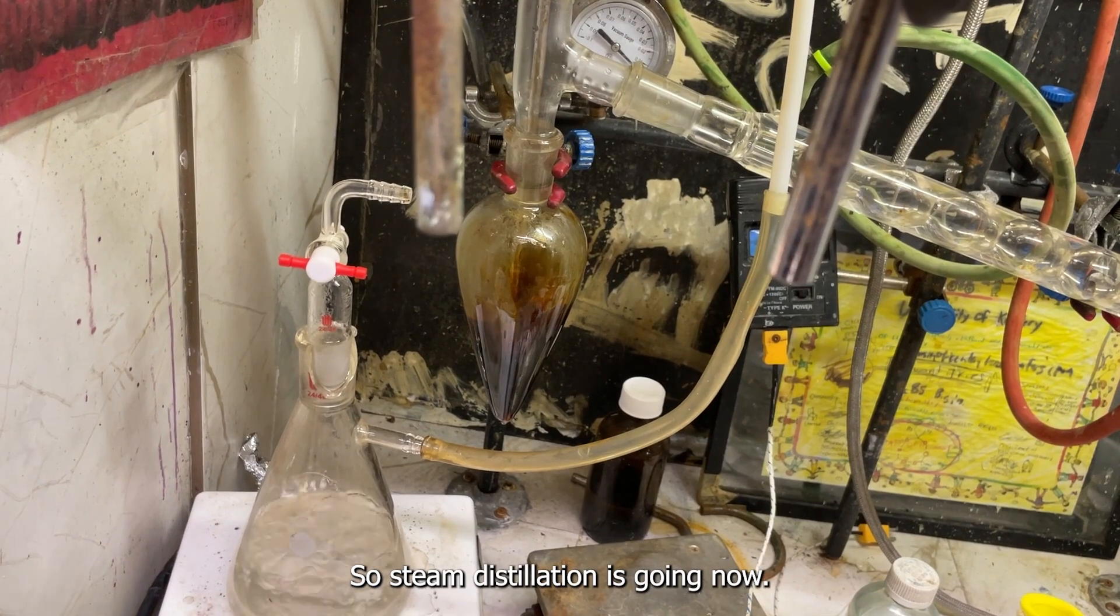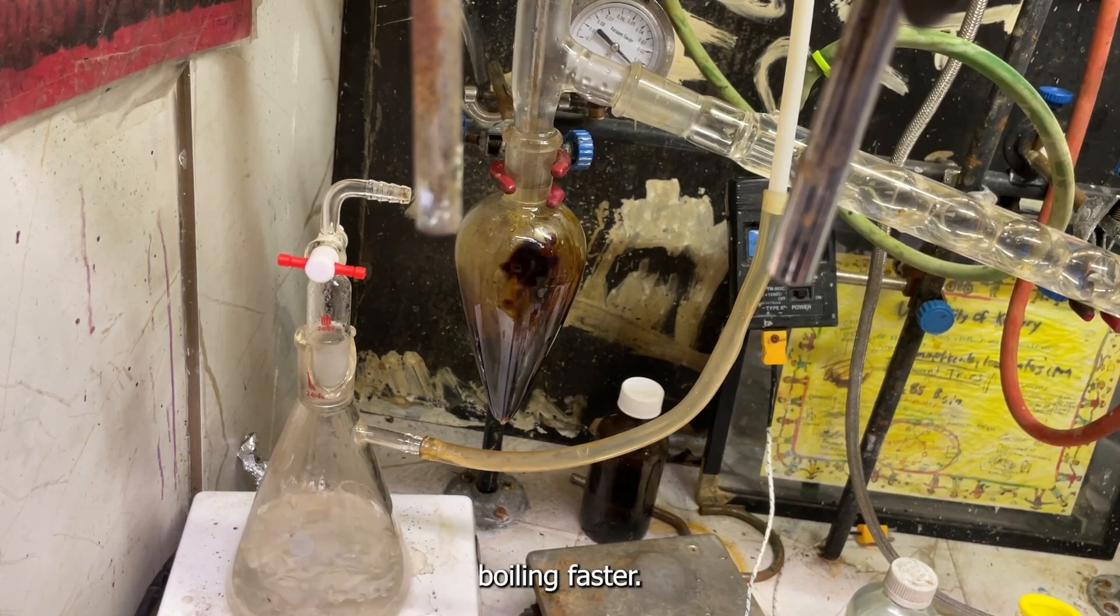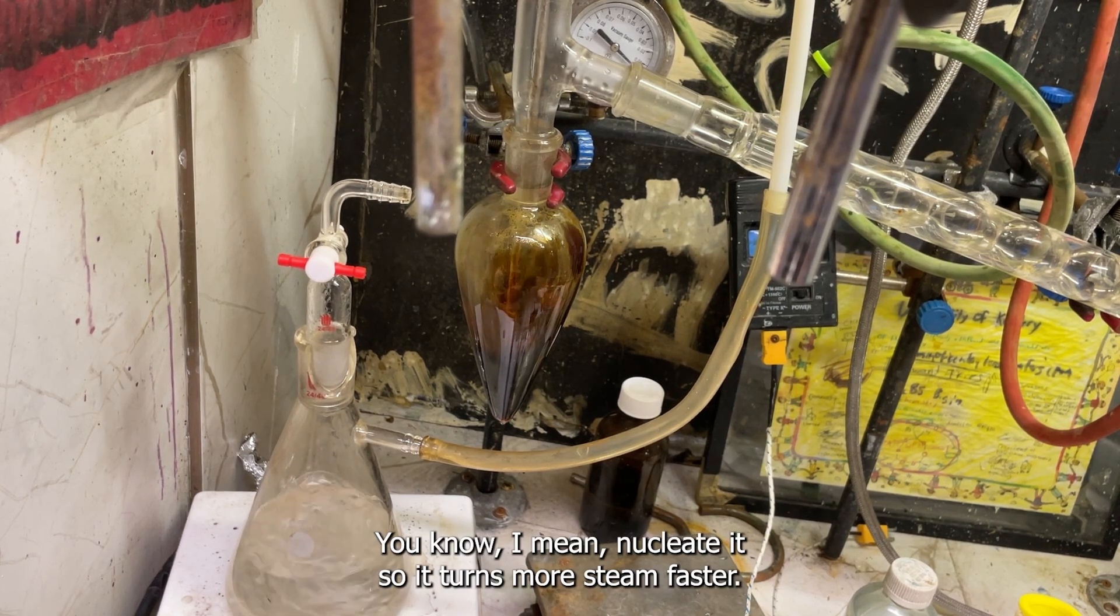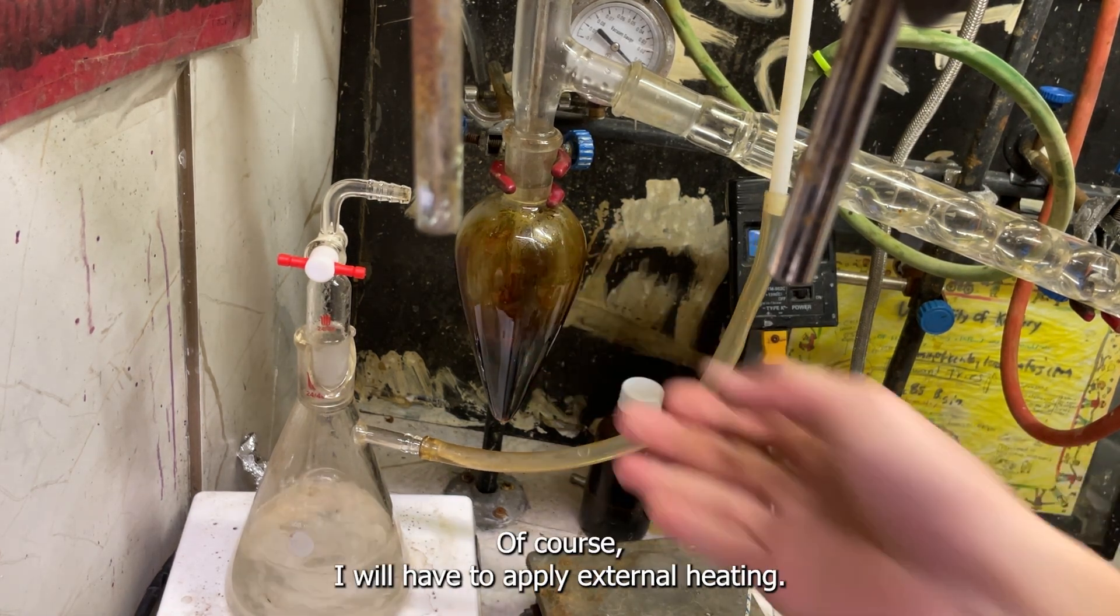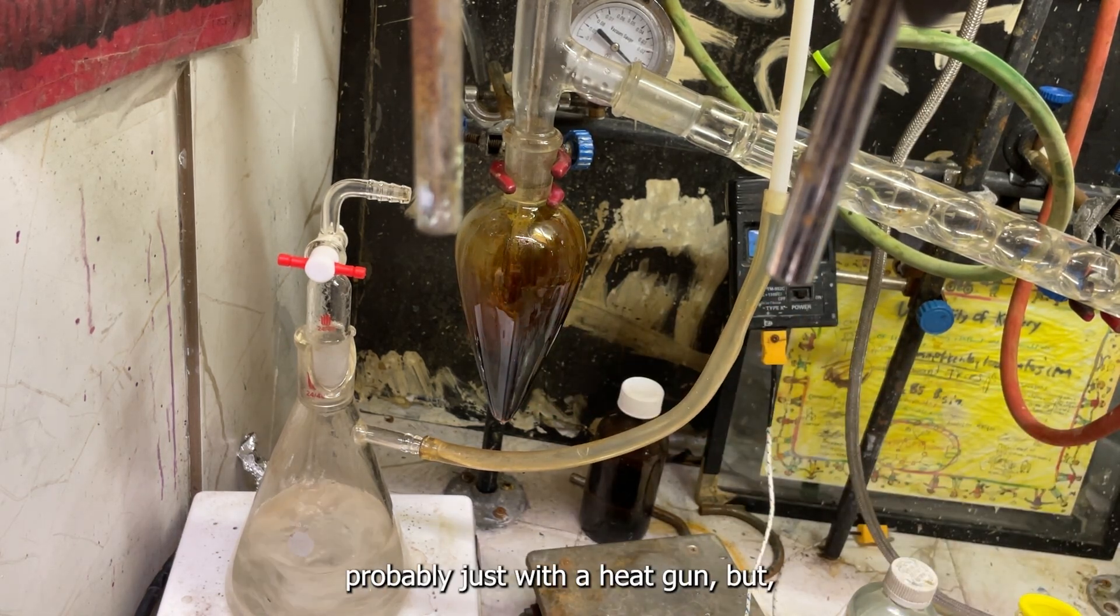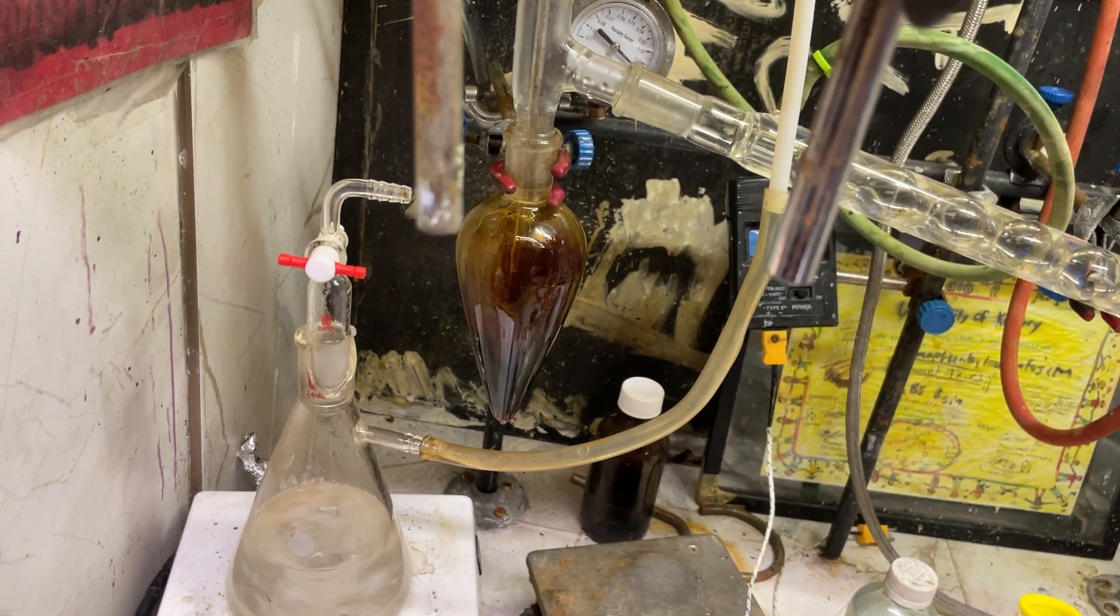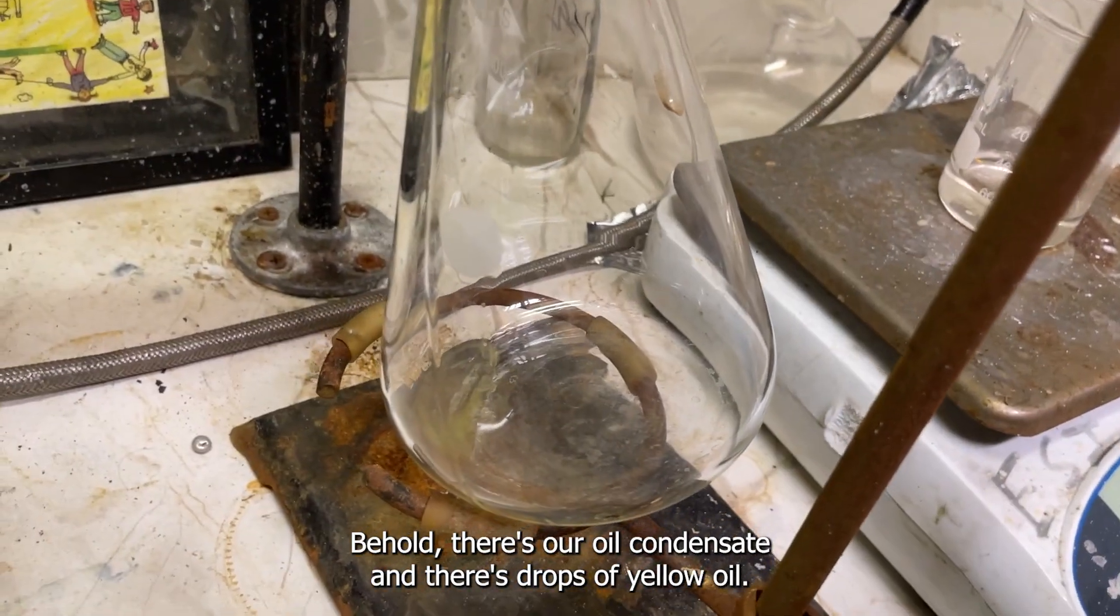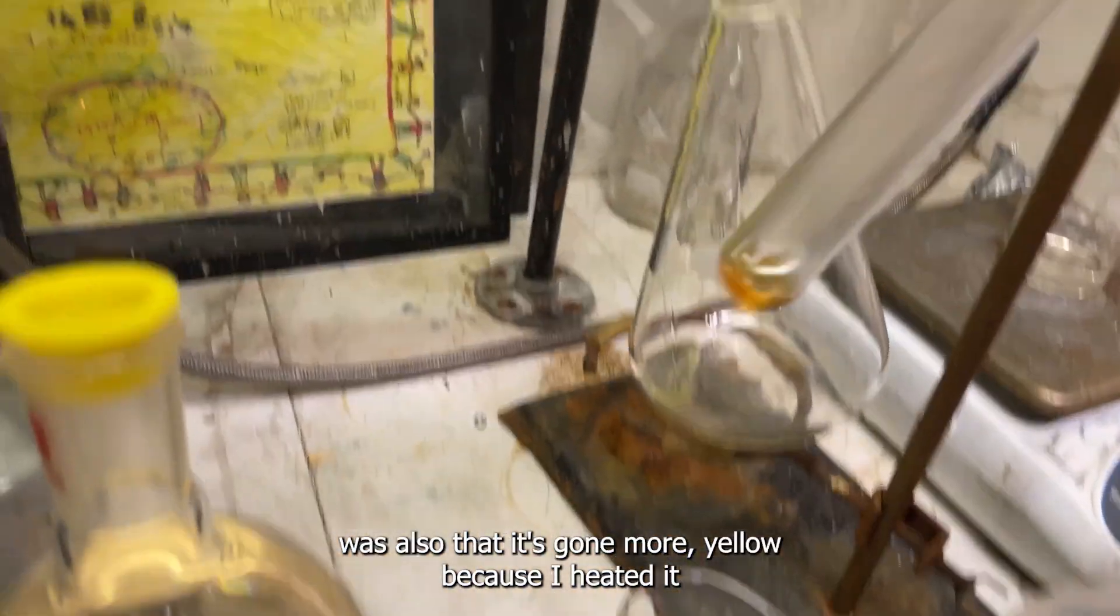Okay so steam distillation's going now. Let's turn up the stirring to get it blowing faster. It's nucleated so it turns more steam faster. This is getting hot of course, I will have to apply external heating probably just with a heat gun. We'll start getting condensate over. Behold, there's our oily condensate and there's drops of yellow oil. Yes it is supposed to be yellow, or I think anyways, at least the last sample I made was also that. It's gone more yellow because I heated it to try to dry it.